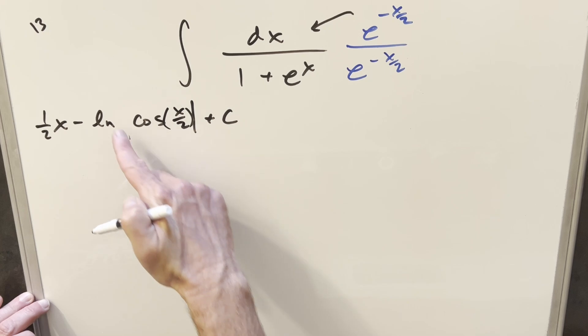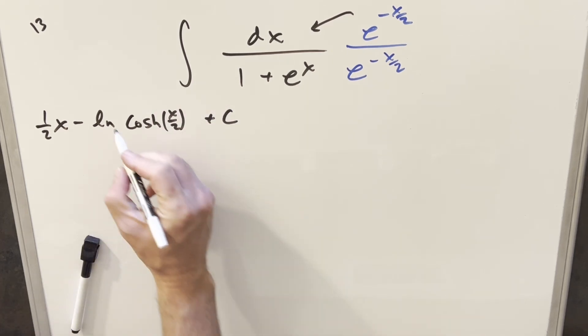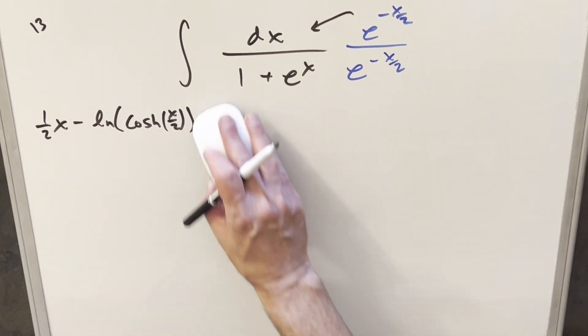So first, cosh. Sorry, that's cosh, not cosine. Let's change that. So first, cosh is always positive. So I'm just going to remove absolute value because we don't need that there. And let's get rid of the plus c for now.